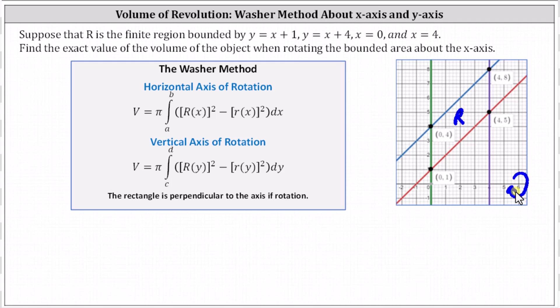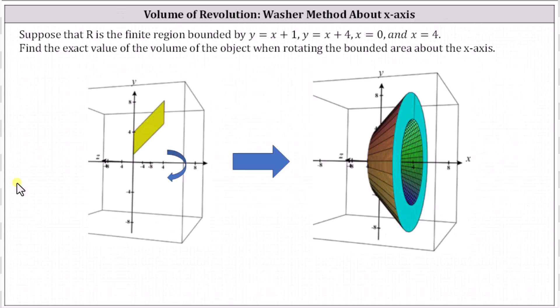Before we go over our notes, let's look at this in 3D. On the left, we have the bounded region R. When rotated about the x-axis, we have the solid shown on the right. Our goal is to find the exact value of the volume.